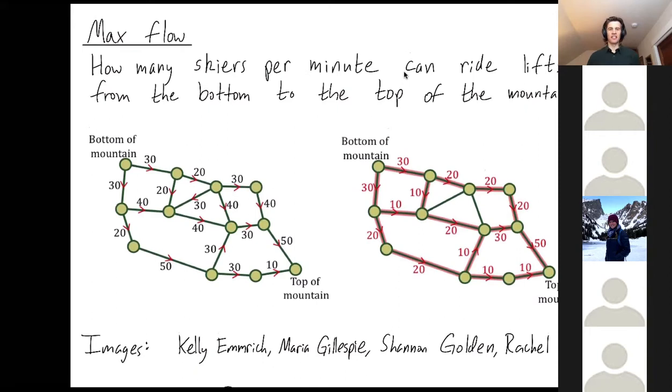Here's our example problem. The image is stolen from a book that Kelly Emmerich and Rhea Gillespie and Shannon Golden and Rachel Preece and I are working on for undergrads. Pretend you have a crowded day at this ski resort, and the lines for the lifts are really crowded. You're trying to figure out how many people can you get from the bottom of the hill to the top of the hill per minute riding these lifts. In this picture here, each edge is a lift taking you from the hut at the bottom of the mountain to this hut partway up the mountain.